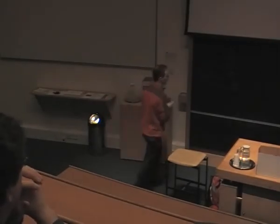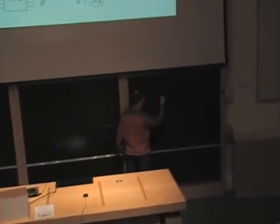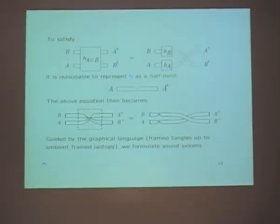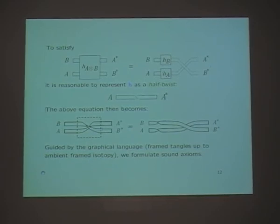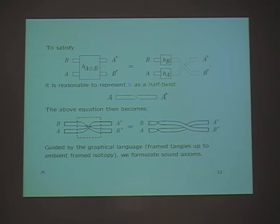In every tortile category you always have this kind of full twist — the shoelace twist. This is just a half twist where A is the front of the ribbon and A-star is the back of the ribbon. So when we write H like that, the required equation is true. When you have two layers you have to twist the whole strand of two layers, and that's why this equation is different. It's obvious what it means for an axiom to be sound: if you draw the diagram for the left-hand side and the right-hand side, then up to isotopy of these framed tangles, they're the same.